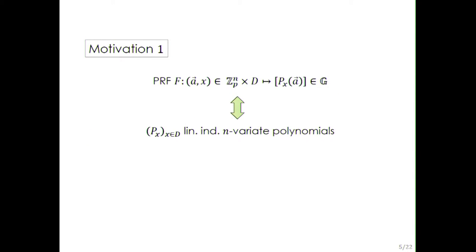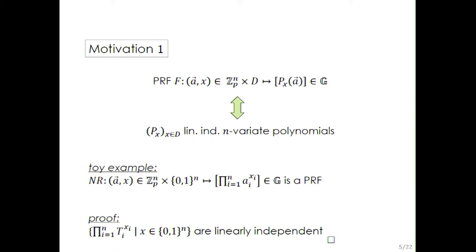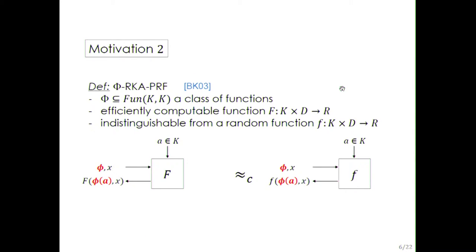The first motivation is that if we define a function this way, it is a pseudorandom function if and only if the associated family of polynomials is linearly independent. For instance, to prove the security of the Naor-Reingold PRF, it is sufficient to just verify that the corresponding family of polynomials is linearly independent. This is very simple — just one line.